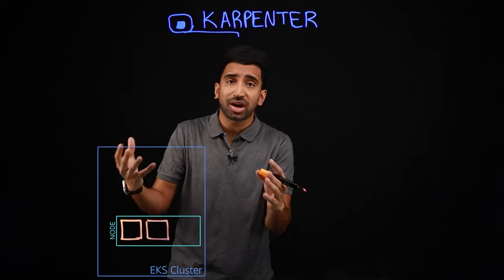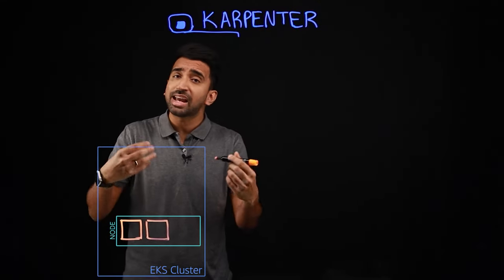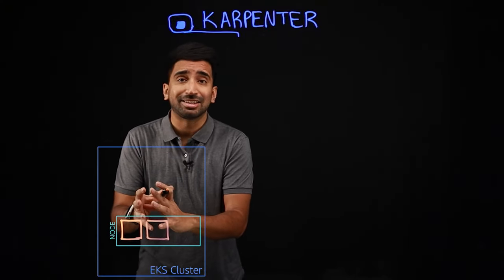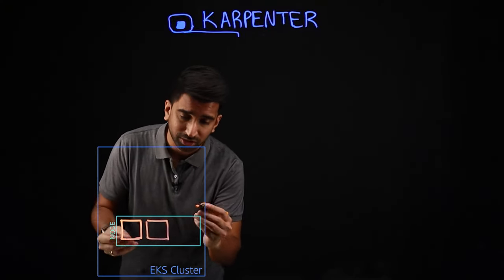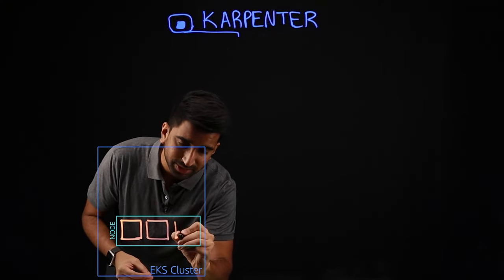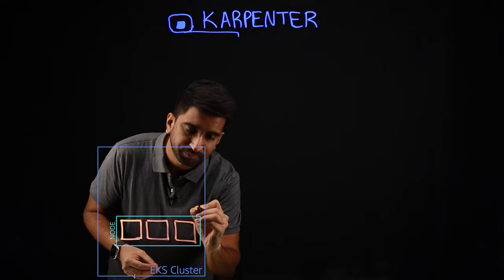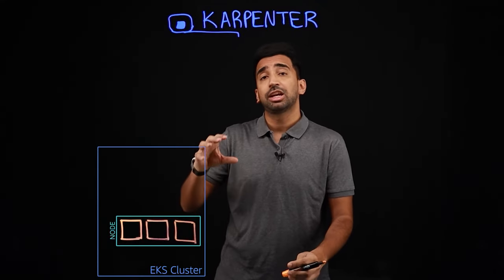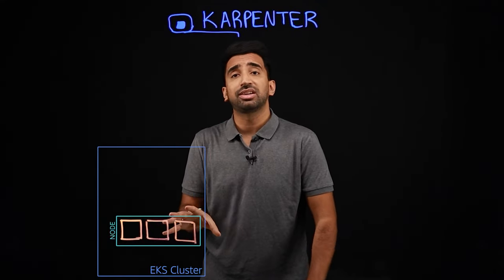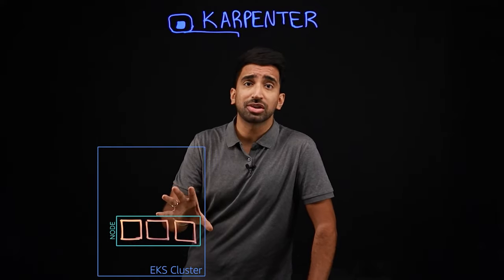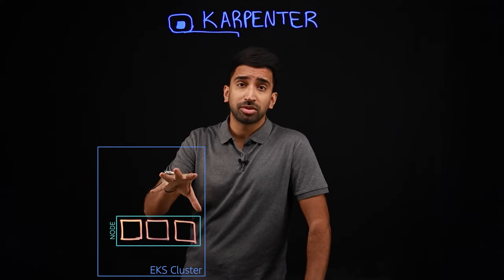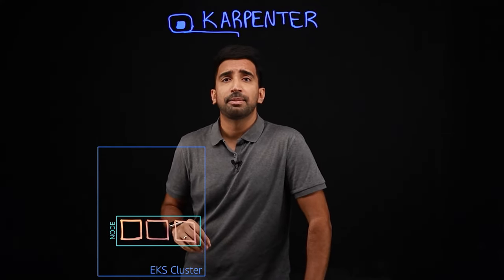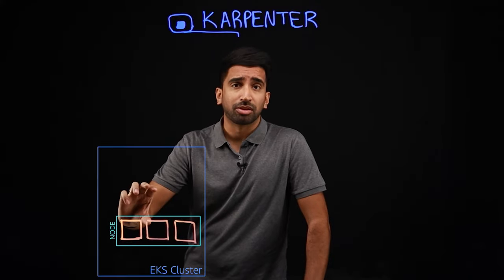Let's say my app is receiving traffic and HPA — Horizontal Pod Autoscaler — indicates that I need to scale it up, so we'll spin up an additional pod. Vertical Pod Autoscaler is similar; it can be installed into your cluster and manages the resource allocation, like CPU or memory usage of the pods. It's kind of vertical scaling — making them larger.